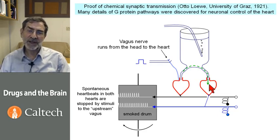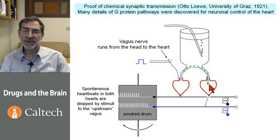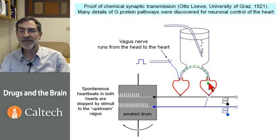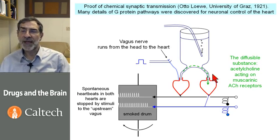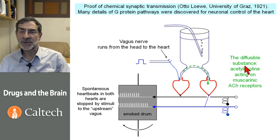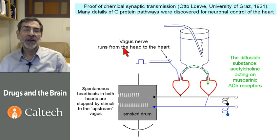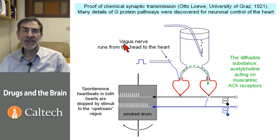This experiment involves lots of controls and repetitions, but the basic principle is this diffusible substance. Those of you who are German speakers will know that a diffusible substance is often called a Stoff, and so Arthur Löwe called the diffusible substance the vagus Stoff.